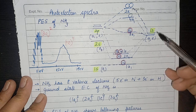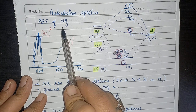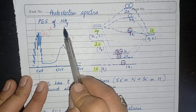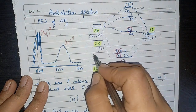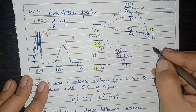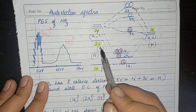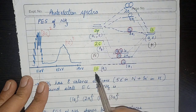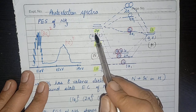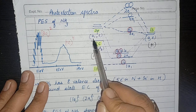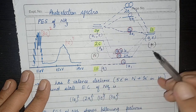First of all, in the photoelectron spectra of NH₃, that is ammonia, we have to see the molecular orbital diagram of ammonia. In this diagram, on one side are the orbitals of nitrogen and on the other side are the orbitals of hydrogen. In nitrogen, we have the 1s orbital designated as a1, the 2s orbital designated as a1, and the 2p orbital — where 2pz is designated as a1 and 2px and 2py are designated as e.